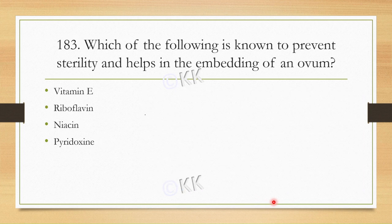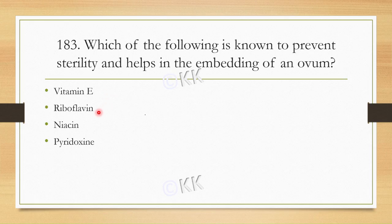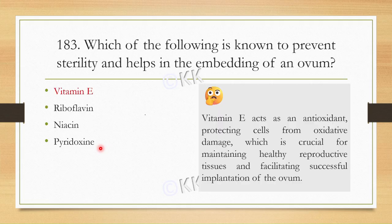Let's move to our next question. Which of the following is known to prevent sterility and help in embedding of an ovum? Option A: Vitamin E. Option B: Riboflavin. Option C: Niacin. Option D: Pyridoxine. The correct option is Vitamin E.